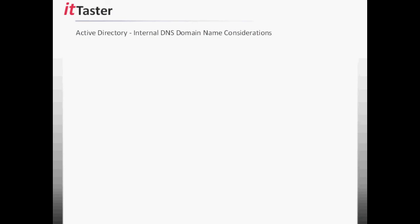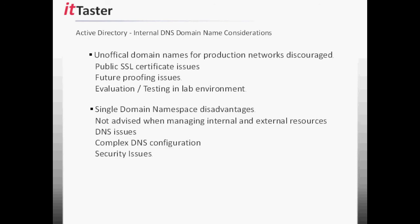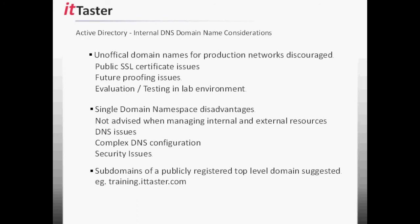For a final summary: the use of unofficial internal domain names for production networks is discouraged, mainly due to issues with public SSL certificates and potential future conflicts with domain names. Unofficial internal domain names are best reserved for testing and evaluation in the lab. A single DNS domain to manage internal and external networks is not advised due to possible conflicts, security issues, and complicated DNS configurations. Best practices suggest working with subdomains of a publicly registered top level domain — such as training.ittaster.com. And finally, carefully plan your Active Directory structure, as it's not easy to change things further down the line. Don't forget to document it.